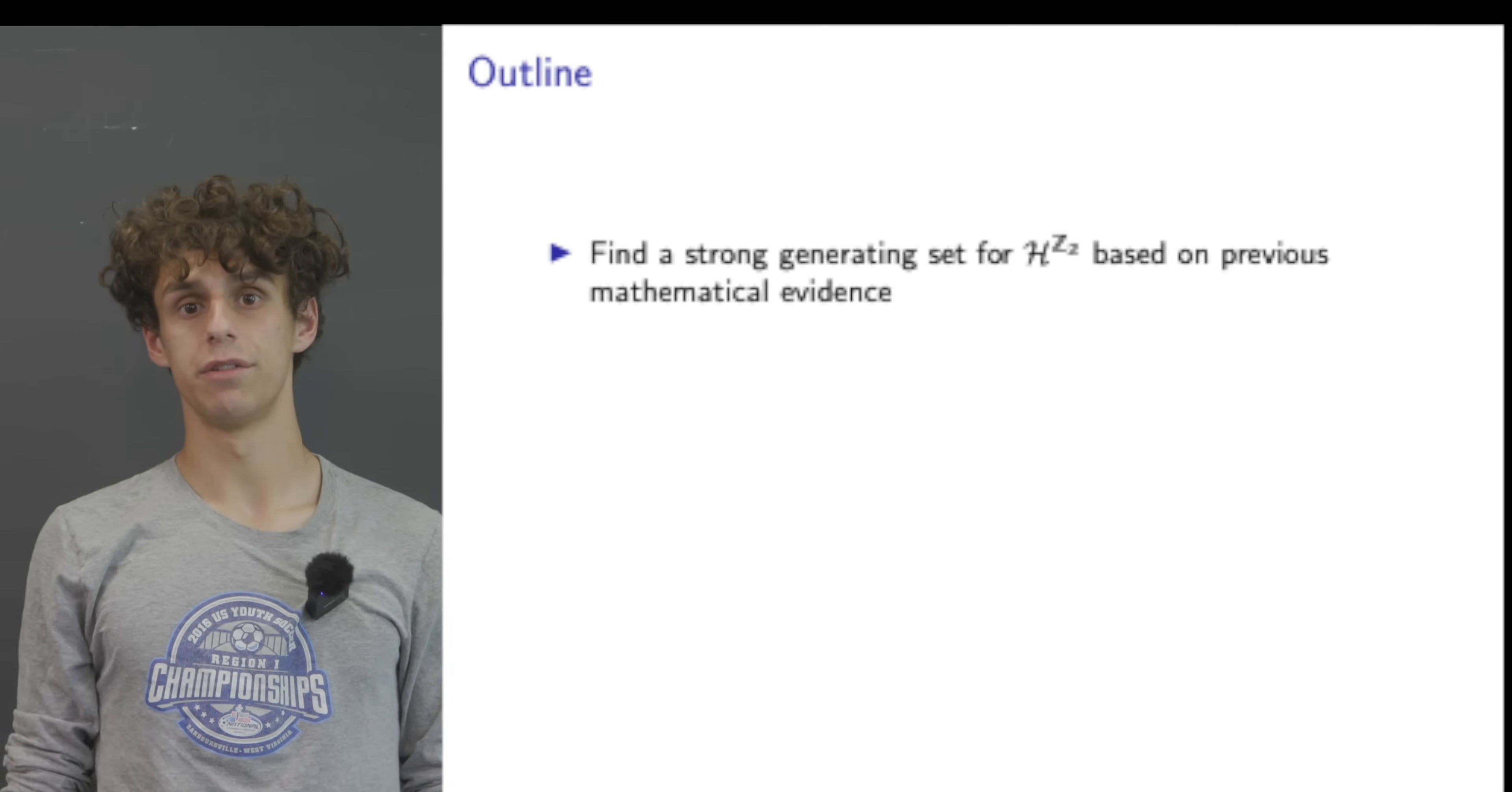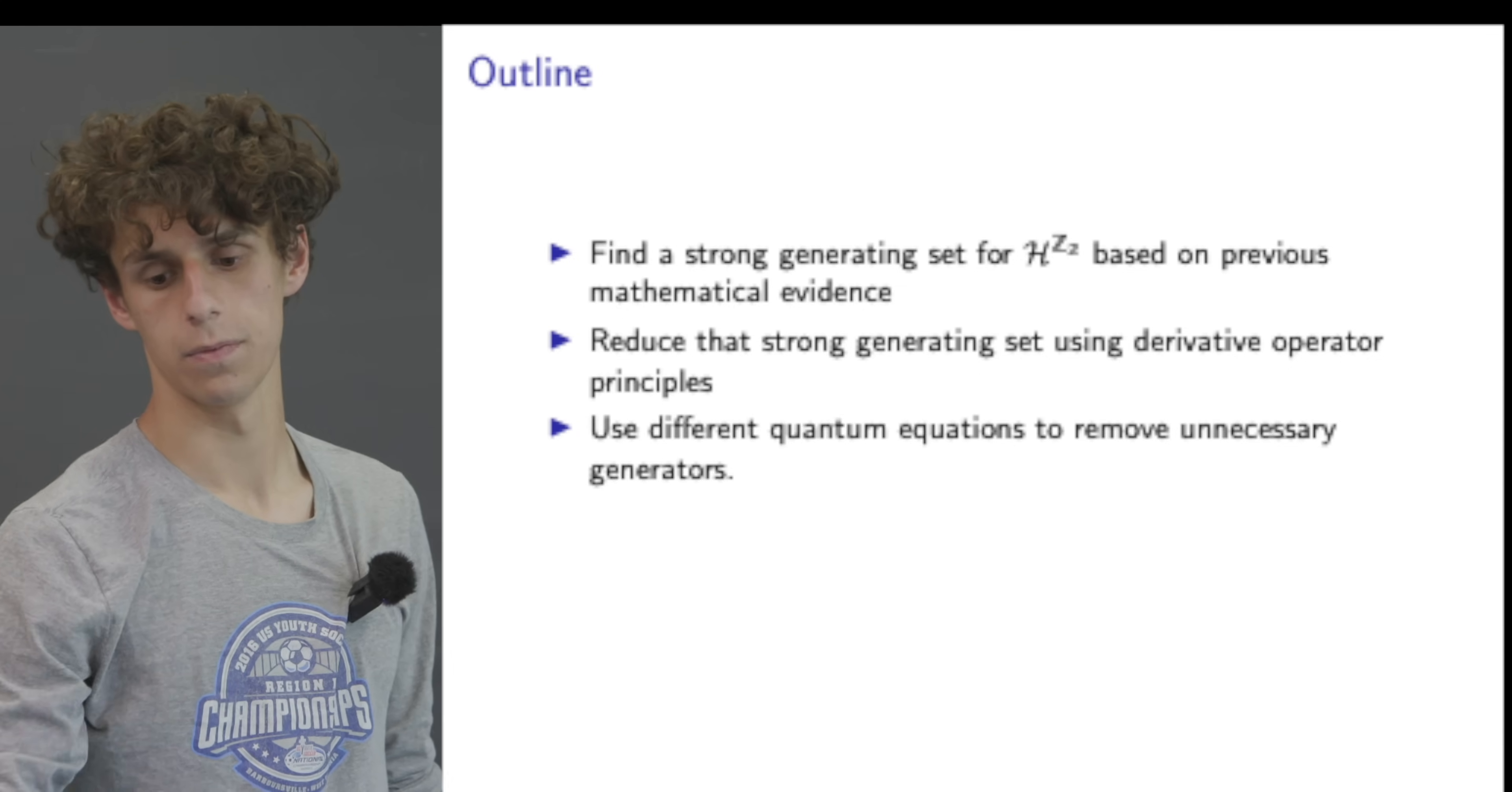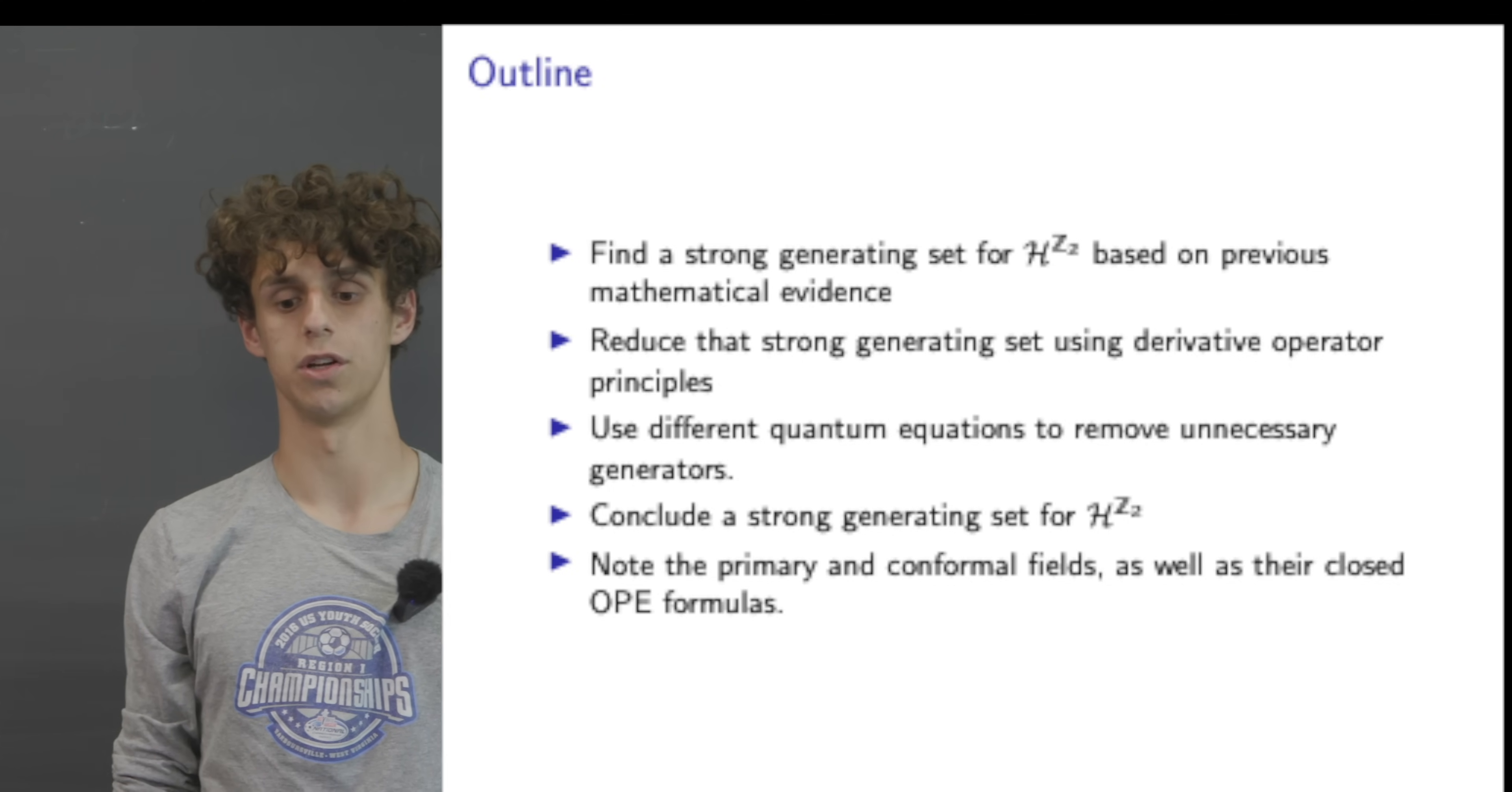Now we want to find a strong generating set for H with Z2 acting on it based on previous mathematical evidence, and we want to reduce that strong generating set using derivative operator principles and use different quantum corrections and equations to remove unnecessary generators. After that, we will want to note the primary and conformal fields as well as their closed OPE formulas.